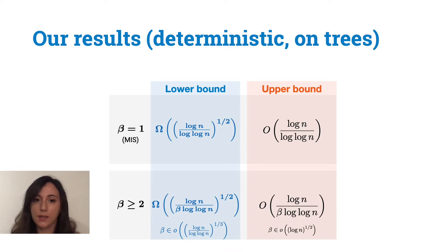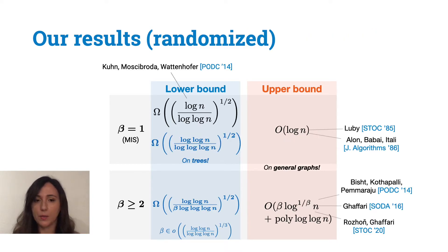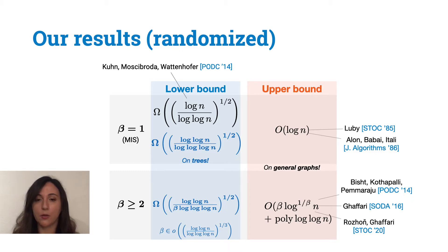As we can see, now there is just a quadratic gap between lower and upper bounds. On the randomised side, our lower bounds are exponentially worse. We are still far from understanding the right randomised complexity of ruling sets, but our results say that log star n is not the right answer even for randomised algorithms.